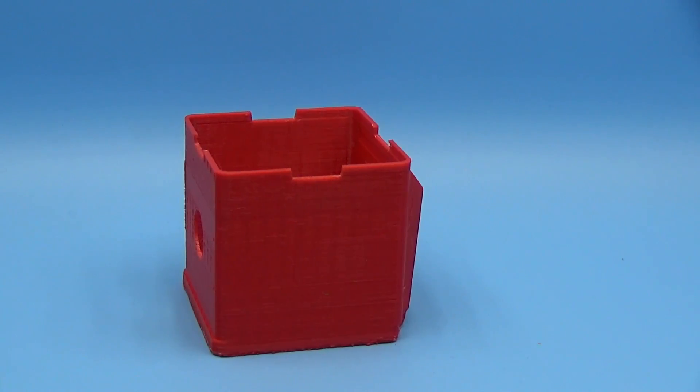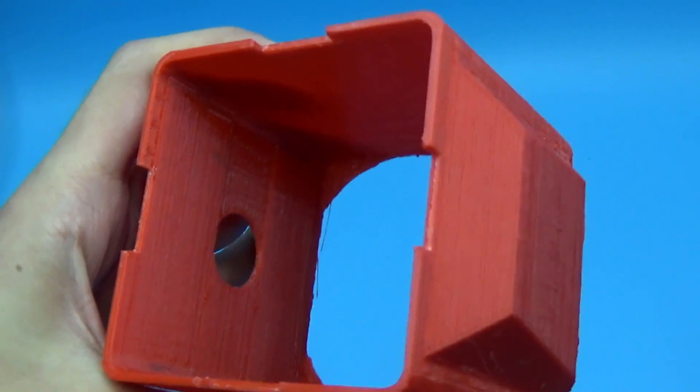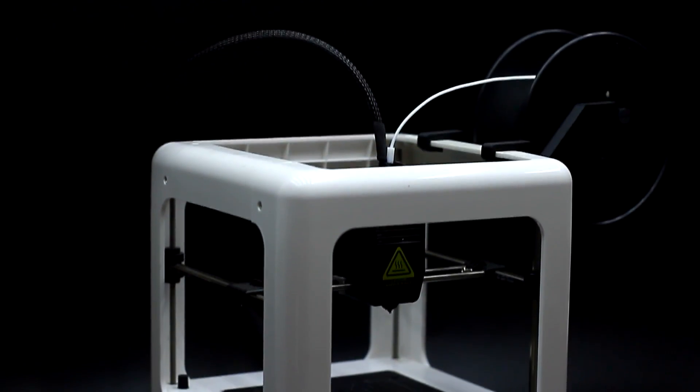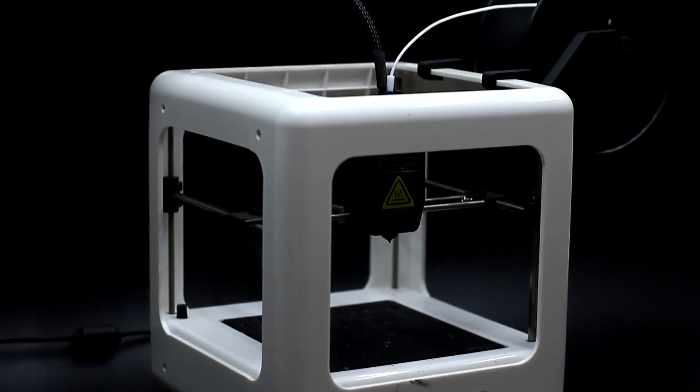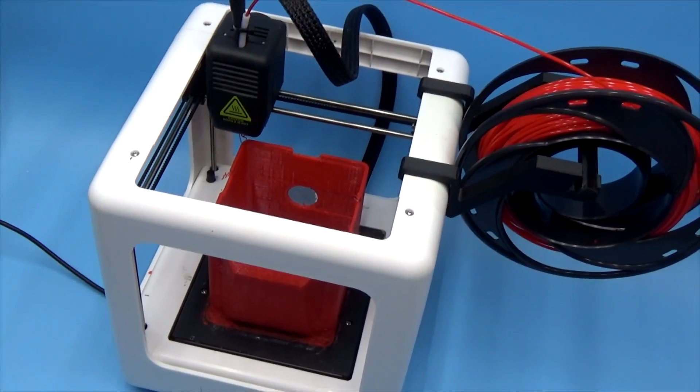Without thinking twice, I decided to print the casing on a 3D printer. Although in principle it could be made from scrap materials in half an hour, it took 15 hours to make it on the printer. But in the end came out a pretty good box. You'll find a link to the model for printing in the description.